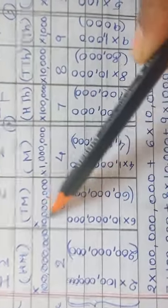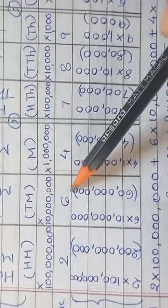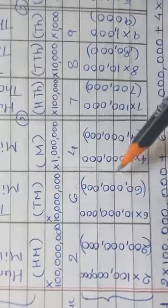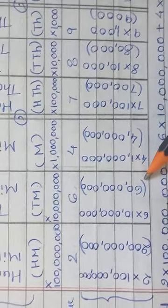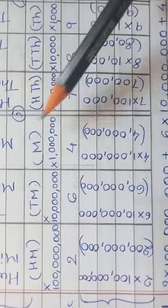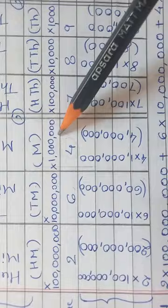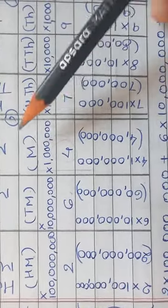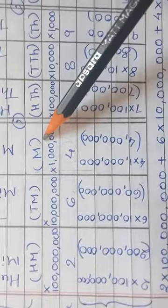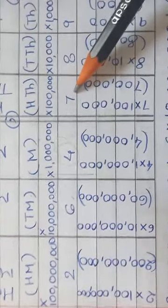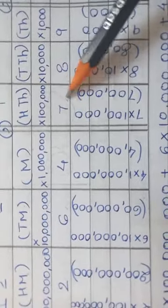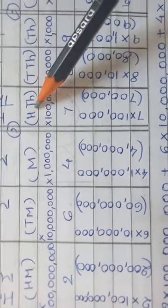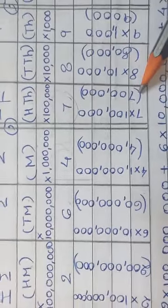6 has a face value of 6, but as it is placed in the ten millions place, the place value of 6 is 60 million. 4 has a face value of 4, but the place value of 4 is 4 million, as it is placed in the millions place. 7 has a face value of 7, but it has a place value of 700,000.